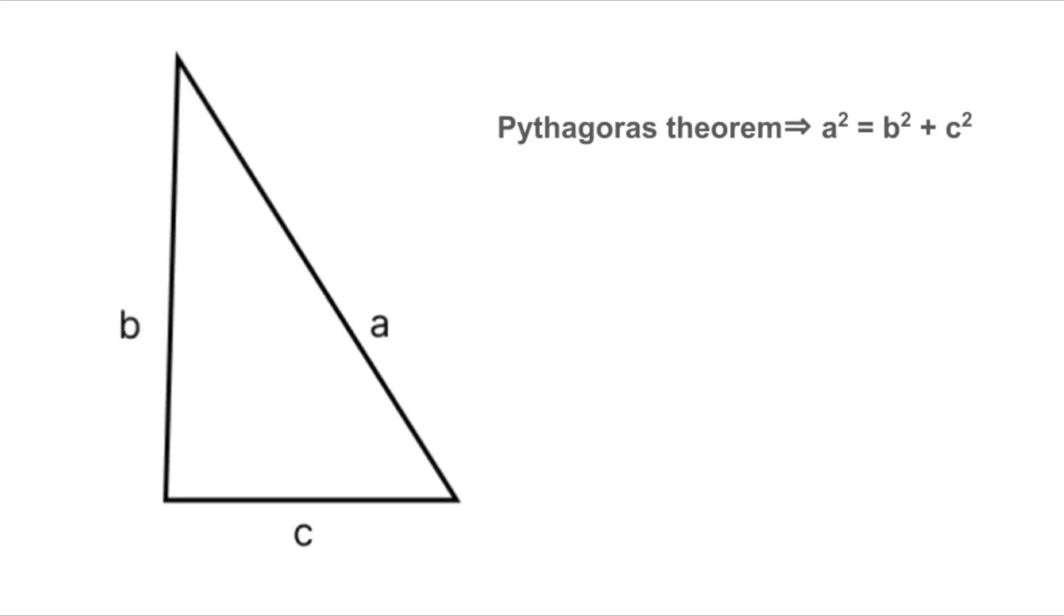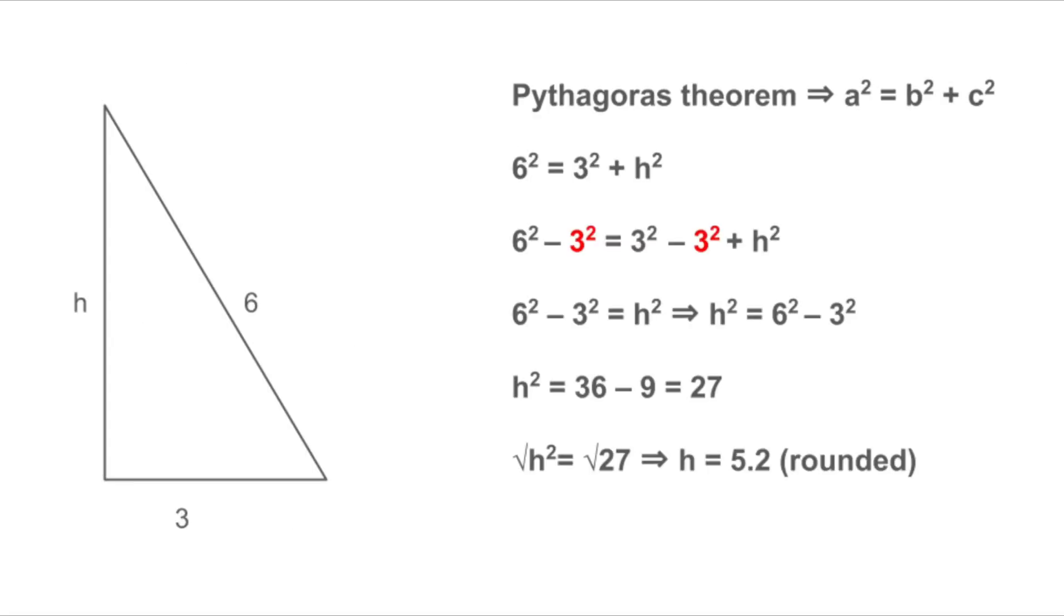Okay, let's bring in our old friend, the Pythagorean theorem. Here's what it tells us. The square of the hypotenuse is equal to the sum of the squares of the other two sides. Written out, it looks like this. A squared is equal to B squared plus C squared. Now let's apply it to our triangle.